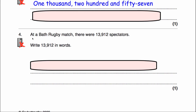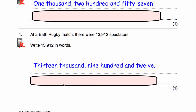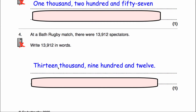Question 4 says at a Bath rugby match there are so many spectators — write that number in words. The number is 13,912, and we'd write that down as thirteen thousand, nine hundred and twelve.